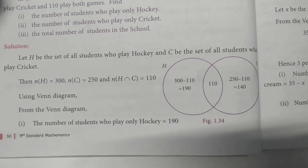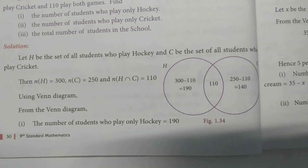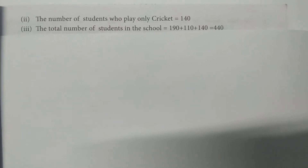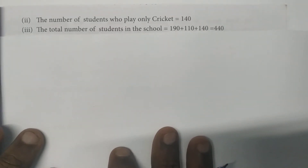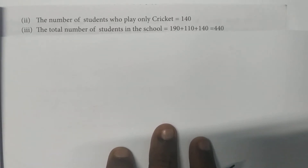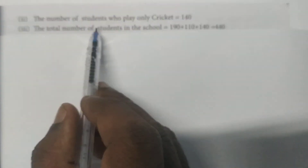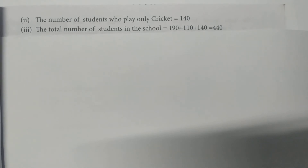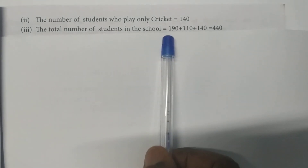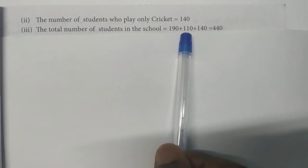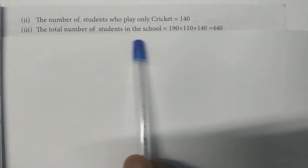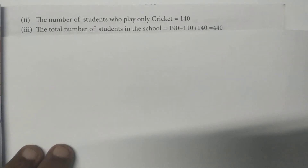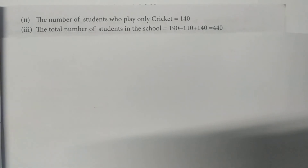Now for the second and third answers: the number of students who play only Cricket is 140. The total number of students in the school: Hockey only is 190, Cricket only is 140, and both is 110, giving a total of 440 students in the school.